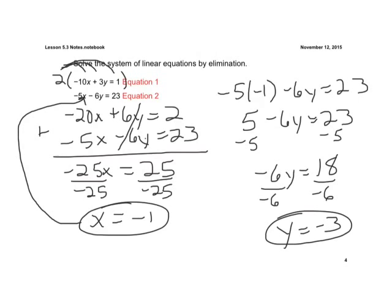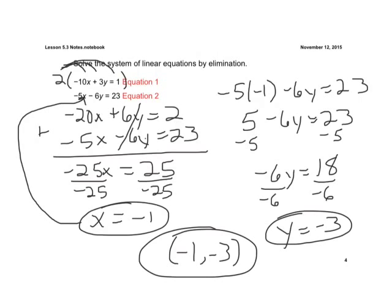And y is going to be equal to negative 3. So there's our ordered pair: negative 1, negative 3. And that is our solution to that system of linear equations.